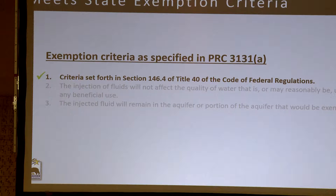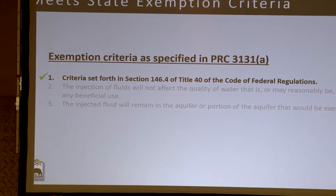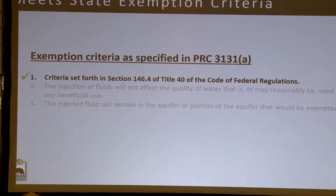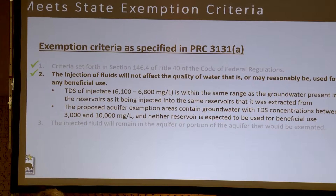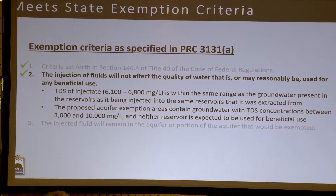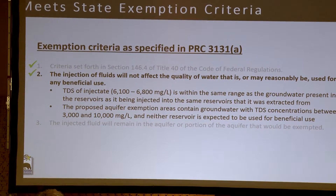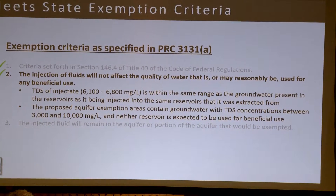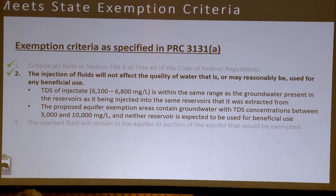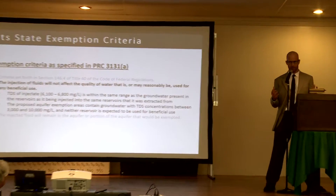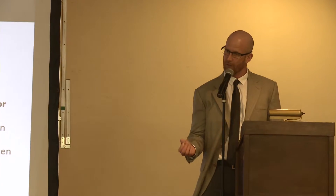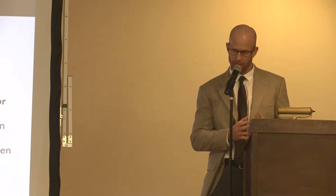Let's see how this data package stacks up against the state criteria. The first state criteria is that the federal criteria must be met — and as we've discussed, the state is comfortable that it has been. The second state criteria is that the injection of fluids will not affect the quality of water that is or may reasonably be used for any beneficial use. The injectate has a TDS ranging from 6,100 to 6,800, which is roughly in the same ballpark as the TDS of water coming out of the Lombardia and the Aranac. Therefore, we can deduce that the injectate is not actually damaging the quality of that water.